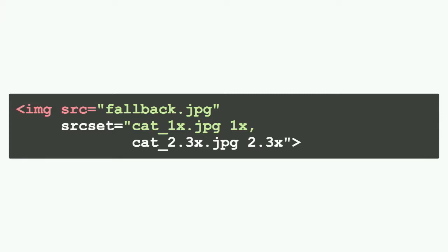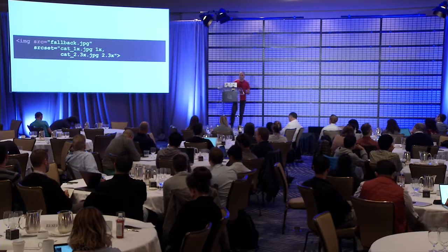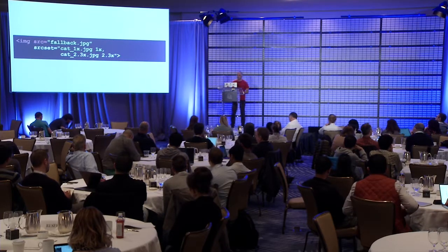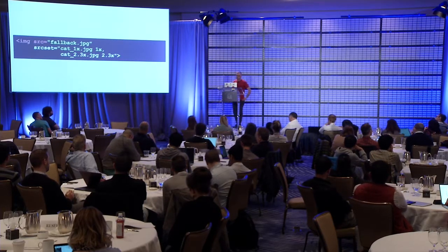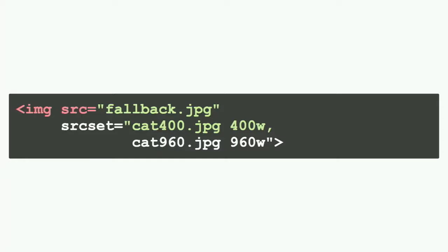Then we have W descriptors, which again describe the image — telling the browser 'this image has a physical width of this many pixels.' The browser is free to pick any variant according to weight versus quality trade-offs. The markup similarly has URL and descriptor pairs.